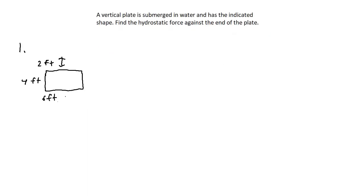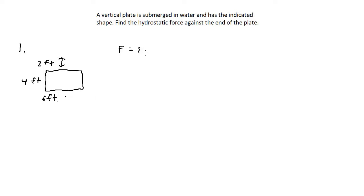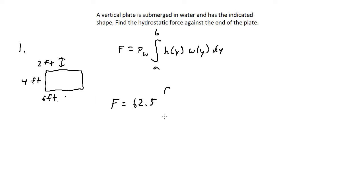For number one, a vertical plate is submerged in water and has the indicated shape. Find the hydrostatic force against the end of the plate. We have a rectangle with a width of six feet and a height of four feet, plus an extra two feet — so it is submerged two feet underwater. Since we're using feet, the weight density is 62.5 pounds per cubic feet. To make this easier, I'll draw this in a coordinate plane.